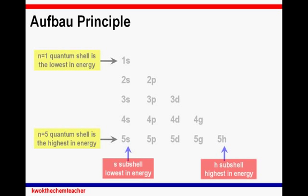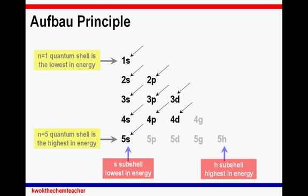Next, we will be sharing with you how the electrons are filled in the subshells. First, the 1S subshell is filled, followed by the 2S subshell, followed by the 2P subshell, followed by the 3S subshell, followed by the 3P subshell, followed by the 4S subshell, followed by the 3D subshell, followed by the 4P subshell, and every other subshell found in this diagonal.